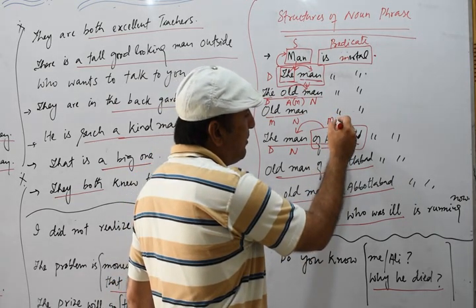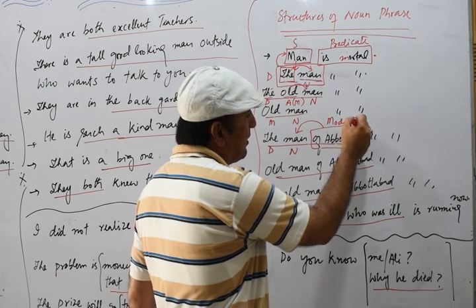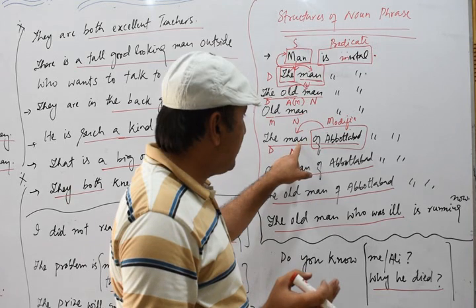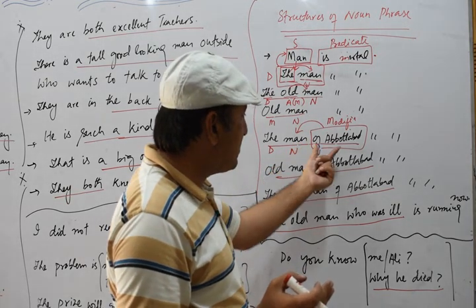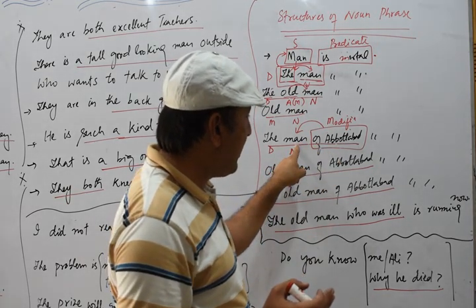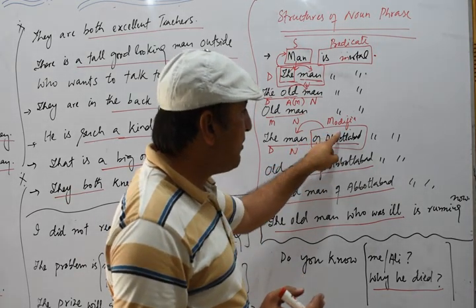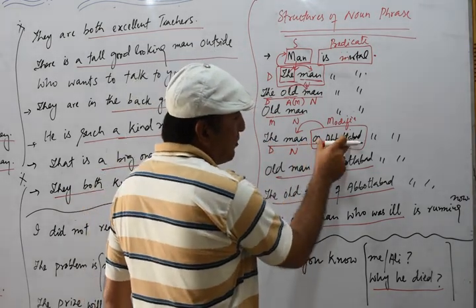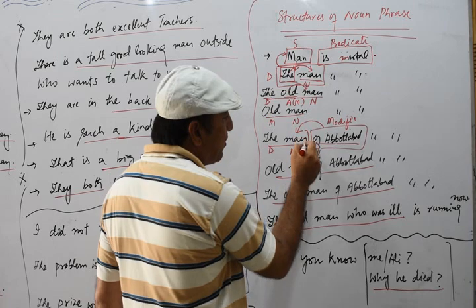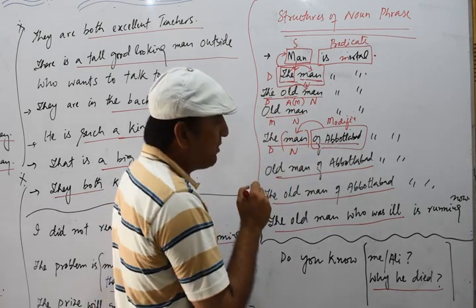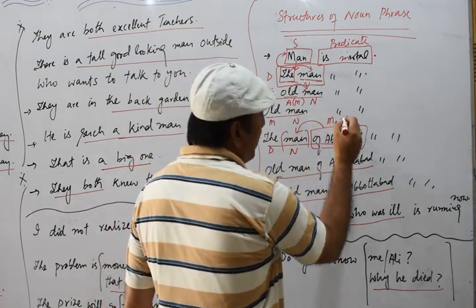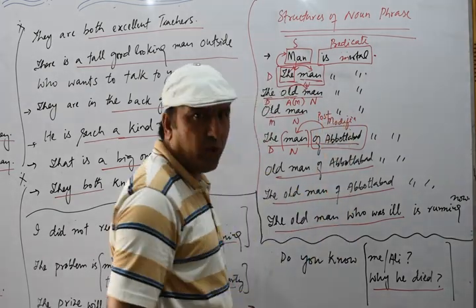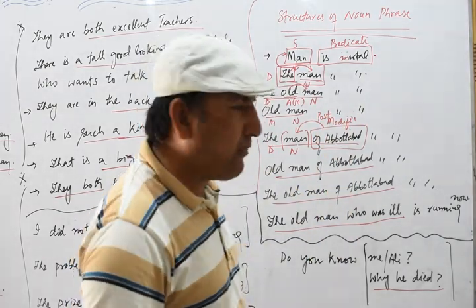This adjective phrase is also known as a modifier. Any word or phrase which modifies a noun — we call it a modifier. Since this modifier comes after the main noun, which is the keyword, we call it a post-modifier.